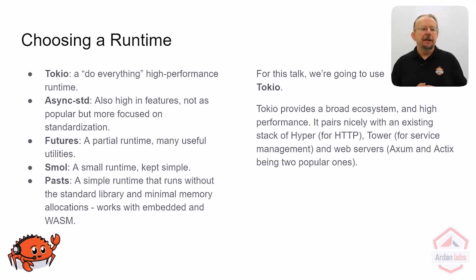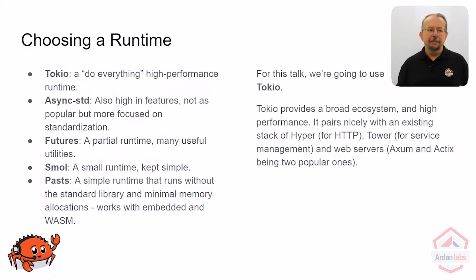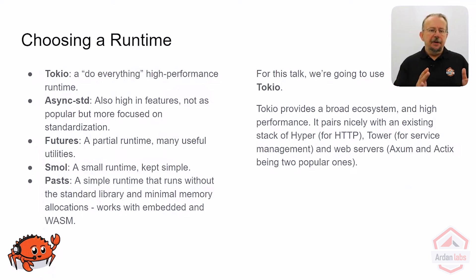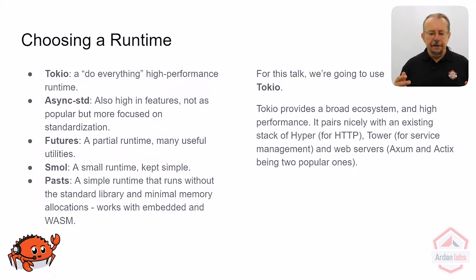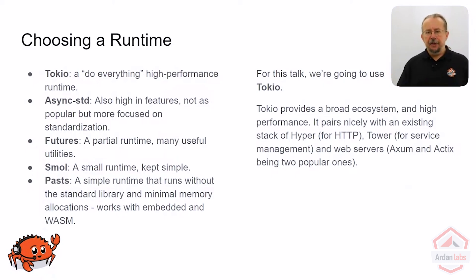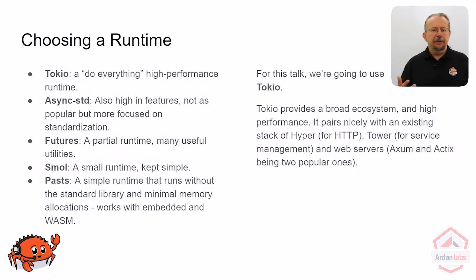So, runtimes — what do you have to choose from? Tokio is my personal favorite when building an enterprise project; it's a do-everything high performance runtime that has re-implemented large parts of the standard library to provide high performance asynchronous versions. It has a reactor — an event-driven system — for file ready, network request ready, and network request pending events, built for high performance mirroring the Rust standard library. Async-std does the same thing at a slightly slower velocity of development, moving towards finding commonalities that could eventually end up in the standard library. Tokio and async-std compete for top dog in terms of performance.